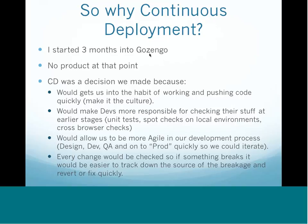The reasons we decided on continuous deployment: we wanted to get into the habit of working and pushing code quickly. We wanted to make devs more responsible for checking their stuff at earlier stages. One very important piece to remember is that continuous deployment is not just QA's responsibility — it's everybody's responsibility to generate a quality product. Things like unit testing, spot checks, local environments, and cross-browser testing all come into play. We also wanted to be agile and use Scrum, and continuous deployment works very well in that model, allowing you in your two-week sprints to build things, get them out quickly, find issues, and iterate quickly.